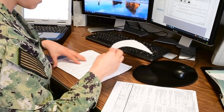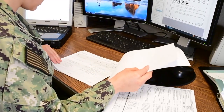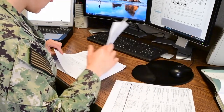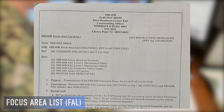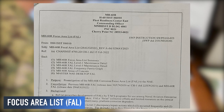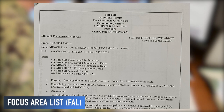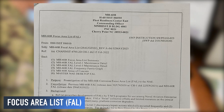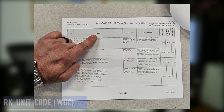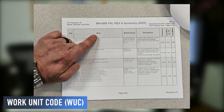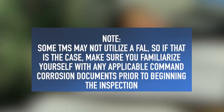Before we walk over to the aircraft to perform the inspection, we need to ensure that we grab essential corrosion documents such as the focus area list or the area of concern list. These documents organize the most corrosion-prone areas on the aircraft by zone and work unit code. This chart must be utilized while performing heavy corrosion specials to ensure that not only are we looking at the most susceptible areas, but also documenting corrosion discrepancies with the correct work unit code.